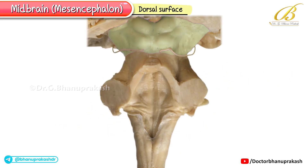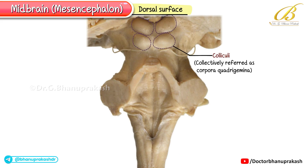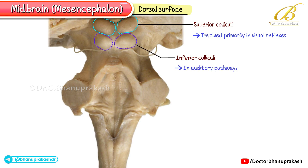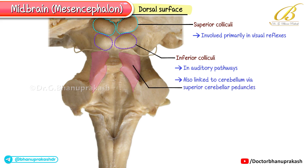Turning to the dorsal surface, we see four rounded swellings called the colliculi, collectively referred to as the corpora quadrigemina. The superior colliculi are involved primarily in visual reflexes, and the inferior colliculi in auditory pathways. This region of the midbrain is also linked to the cerebellum via the superior cerebellar peduncles, ensuring coordination between sensory input and motor activity.